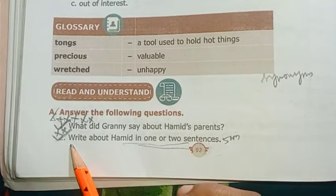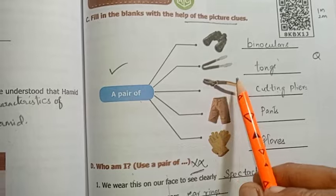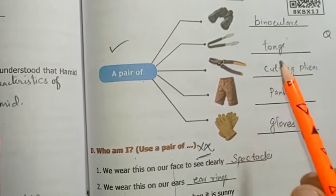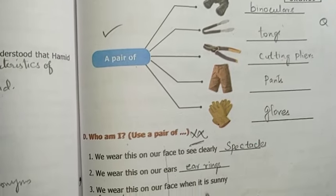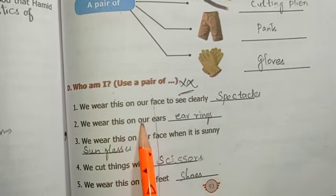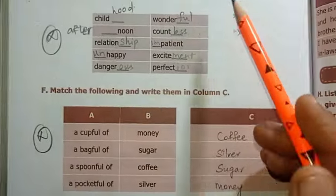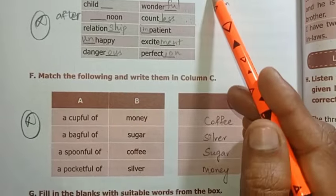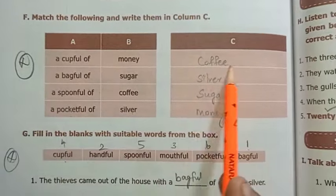Fourth one: what did Hamid buy at the fair and for whom? That is an important question. Why did Granny scold Hamid? This is important. Rearrange the jumbled sentences — this is very important.